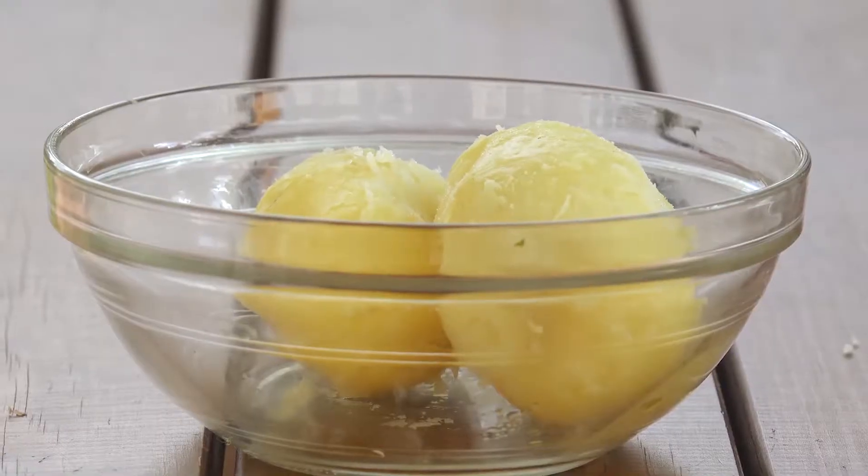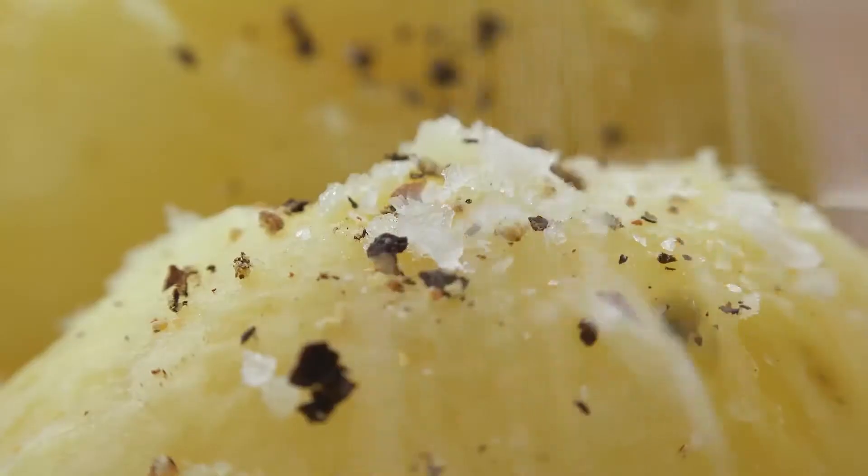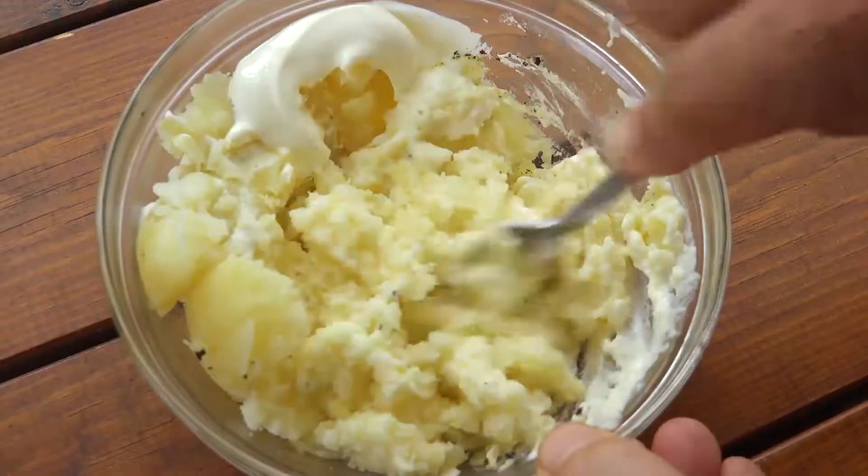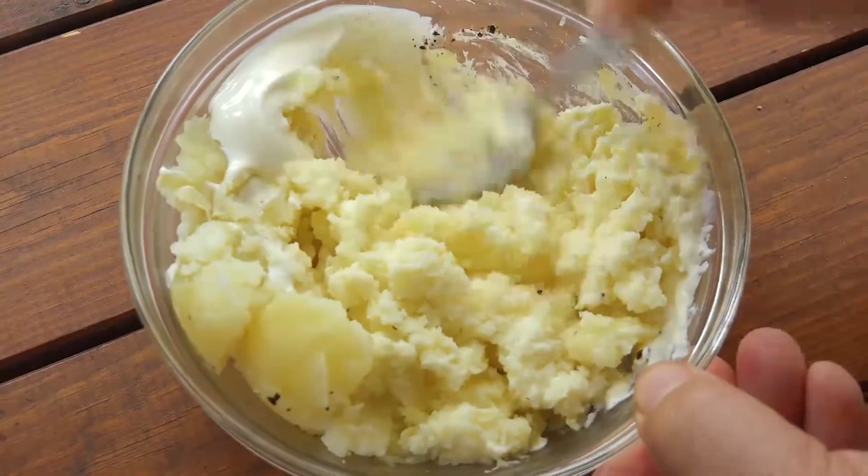In the meantime take some pre-cooked potatoes and add a little bit of olive oil, pepper, salt and cream. Mix it all together and mash it until you achieve a lovely creamy mashed potato.